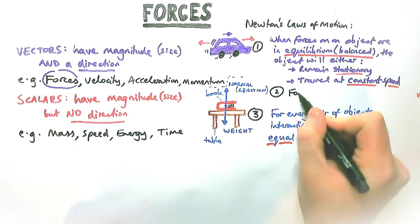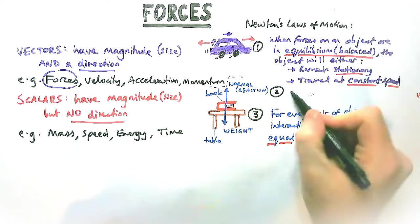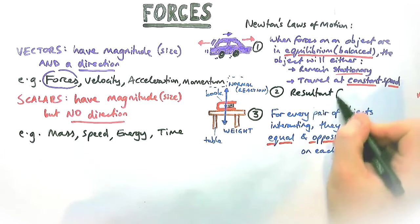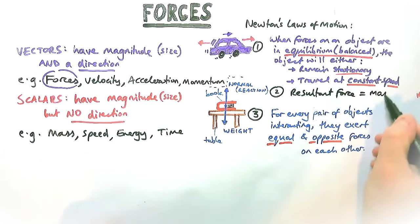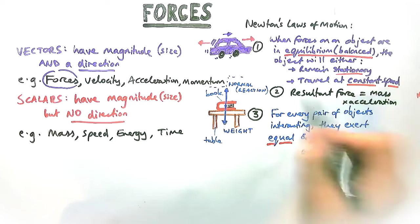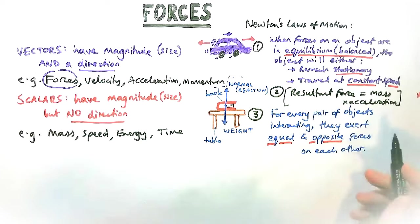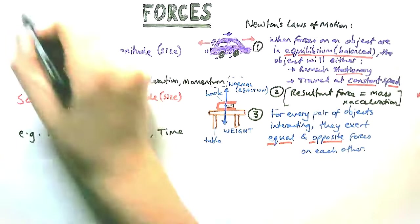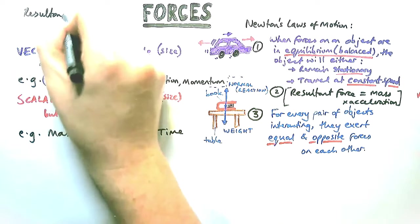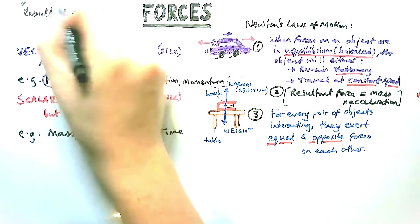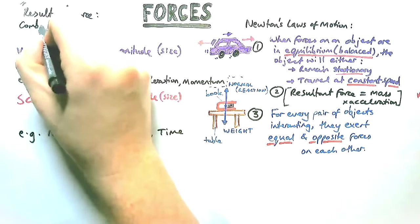Let's talk about Newton's second law, which is the one you don't really need to memorize because it's on your equation sheet this year. Newton's second law states that the resultant force on an object is equal to the mass multiplied by the acceleration. In words, you could say acceleration is proportional to resultant force, or mass is proportional to it as well.